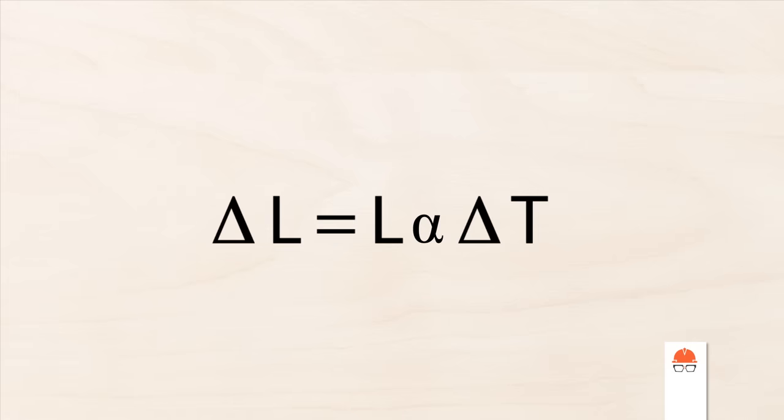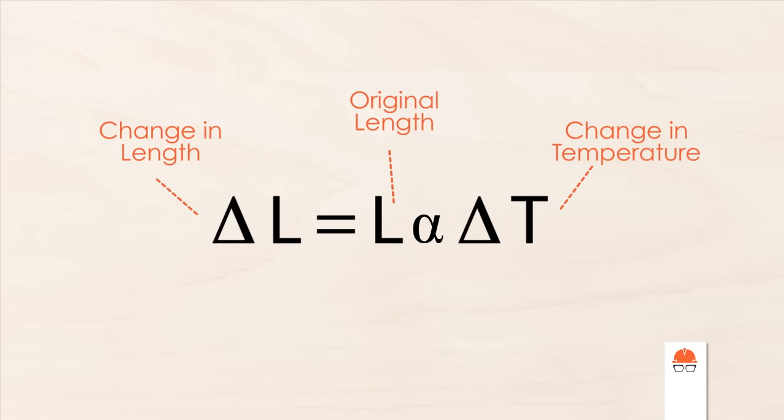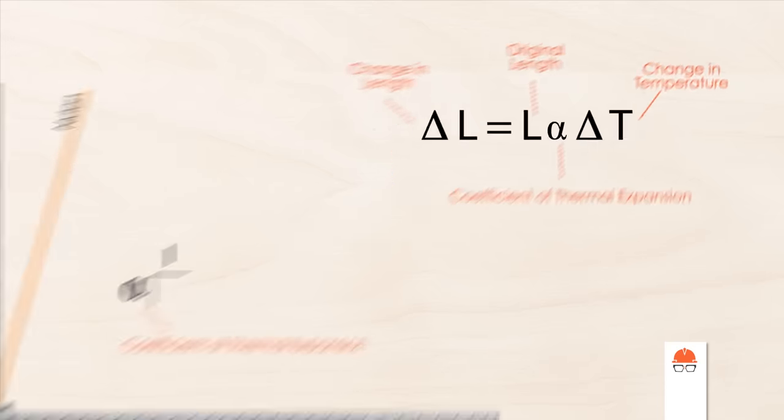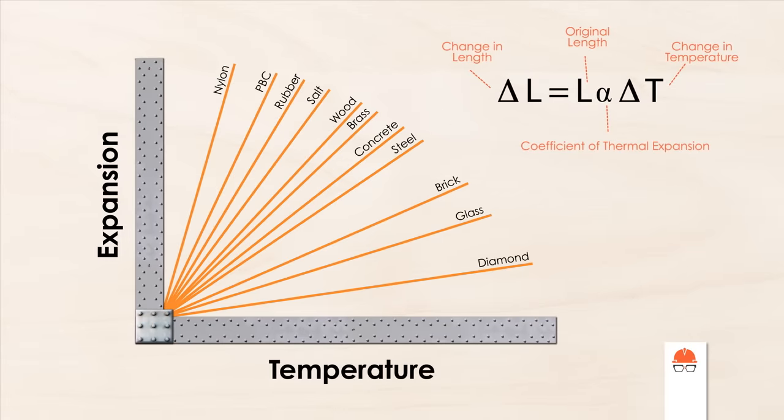This is the formula for thermal expansion. It may look complicated, but it's really not. It essentially says the change in size of anything is a linear function of temperature proportional to its length. And the slope of this line is the coefficient of thermal expansion. We've measured this property for a whole host of materials, and you can look up tables online.